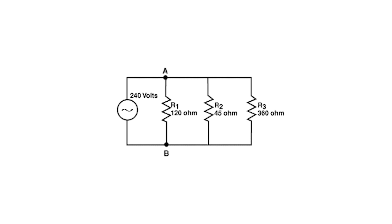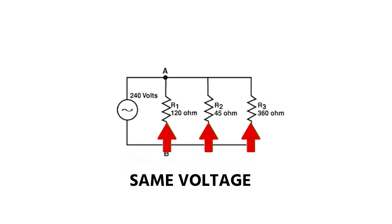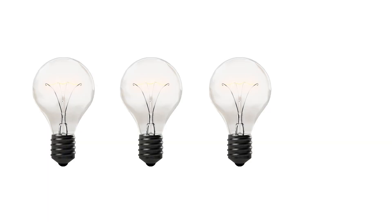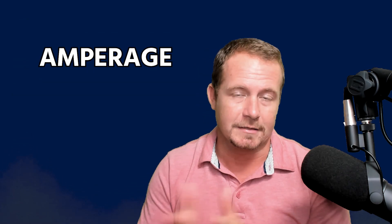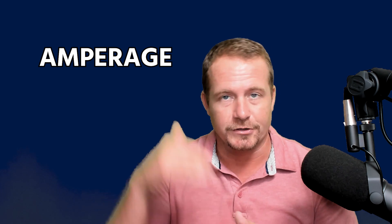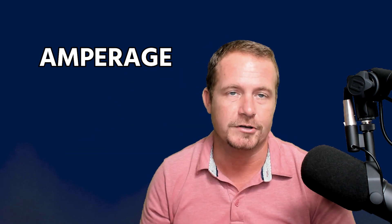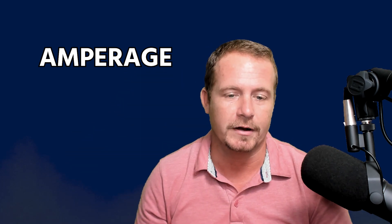In a parallel circuit, the voltage is the same across all the loads — each load gets the same voltage. That's why every light in your house has 120 volts, because they're all wired in parallel with every other light. The amperage in a parallel circuit is simply added up: you take the amperage of each circuit, add it up, and that's the total amperage of whatever you're measuring.